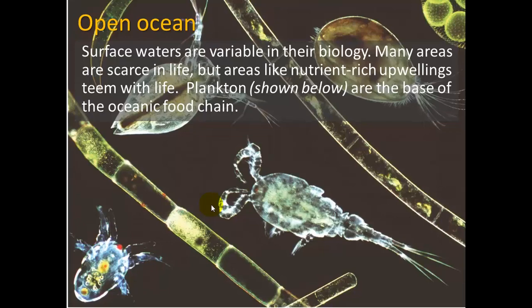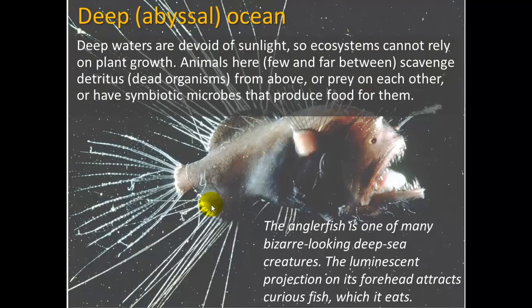The open ocean has surface waters that are variable in biology — many areas are scarce in life, but areas like nutrient-rich upwellings teem with life. Those upwellings are generally found closer to the coast, not in what we'd call the open ocean. Plankton are the base of the oceanic food chain.